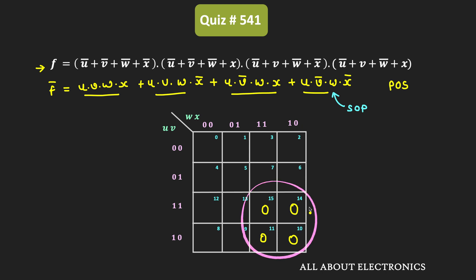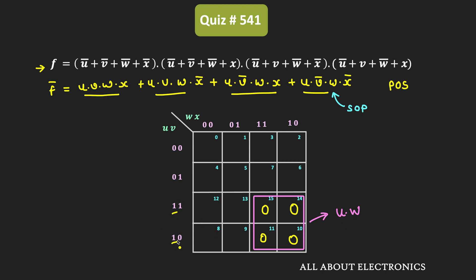We can now simplify the boolean expression by grouping all four minterms in the K-map. Observing the group, the value of u is not changing and the value of w is also not changing. Therefore, this group corresponds to u·w. In this way, we obtain the boolean expression for F-bar, which equals u·w.